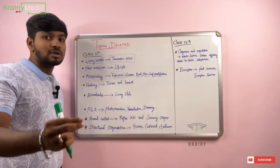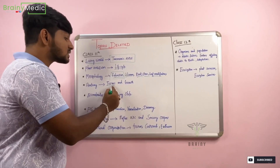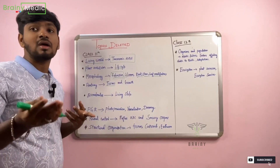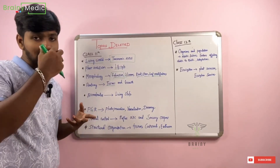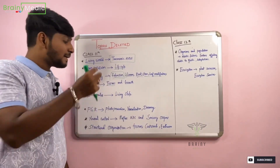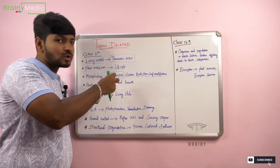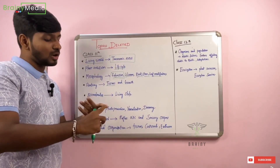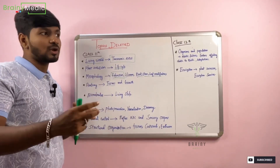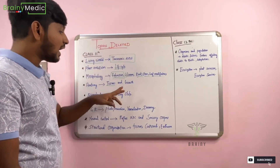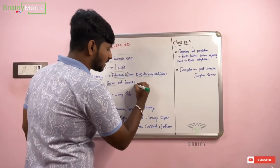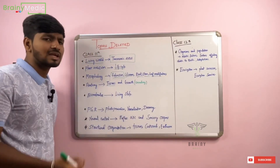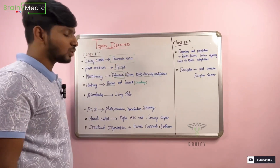Next, Anatomy of Flowering Plants. In Anatomy of Flowering Plants, tissues are covered — Simple tissues and Complex tissues. Simple tissues include Parenchyma and Sclerenchyma. Complex tissues are also covered.